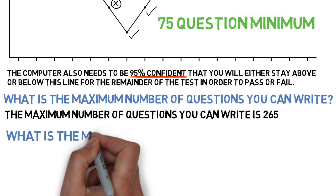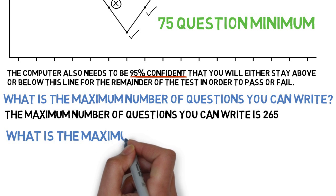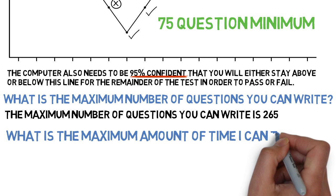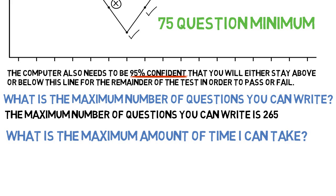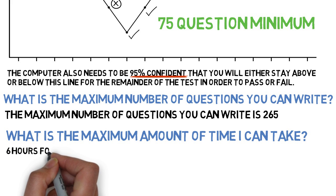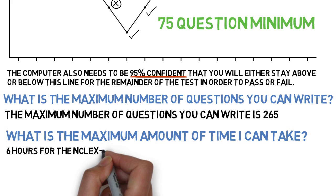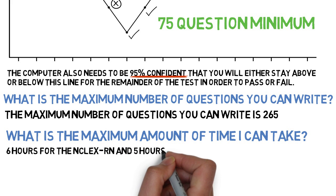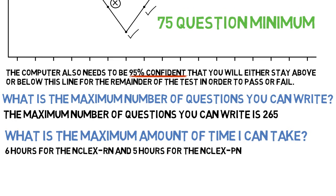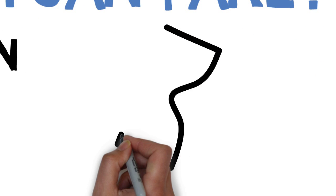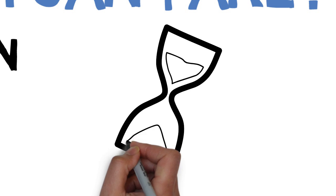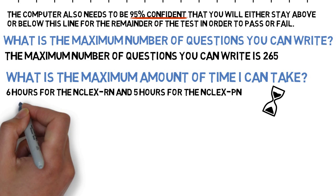What is the maximum amount of time someone can take to write the NCLEX? The maximum amount of time is 6 hours for the NCLEX RN and 5 hours for the NCLEX PN. That said, it is very uncommon for somebody to take 6 hours. Typically people are done between 2 and 3 hours, sometimes even less.